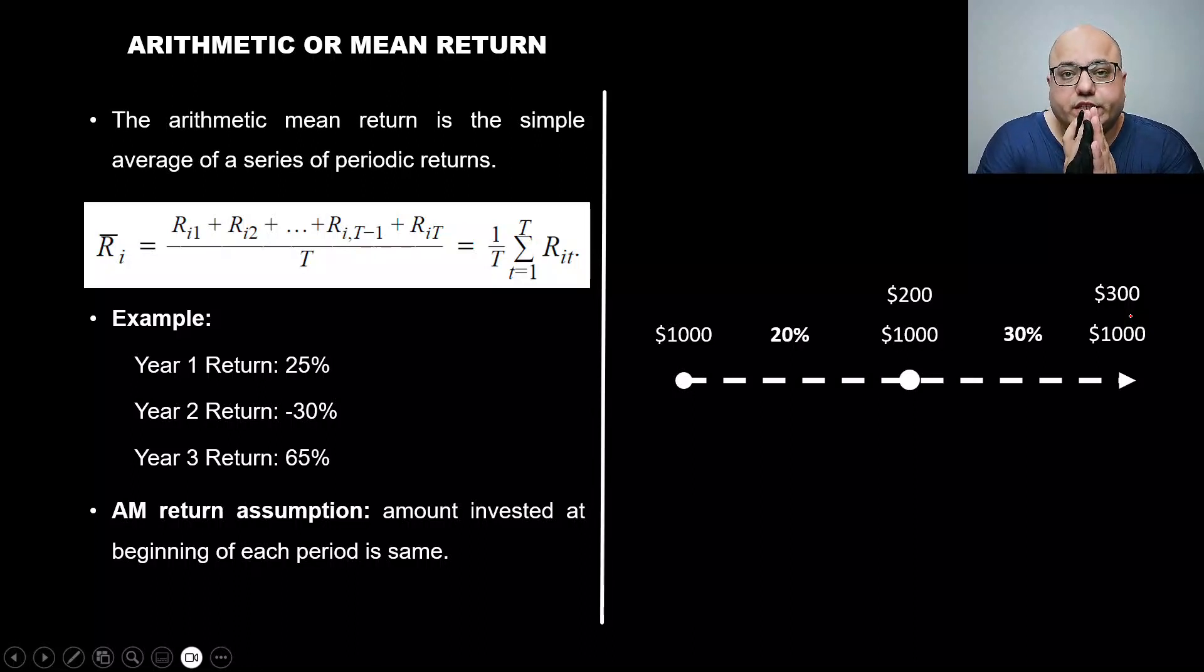Point to be noted: arithmetic mean return's assumption is that only the original principal is invested every period. The interest earned is not going to be invested. Now, this assumption, the problem is, does this happen normally? What I'm going to tell you from experience is that most of the time, not all the time, but most investors like to reinvest their earnings.